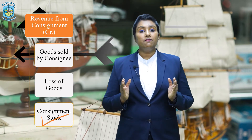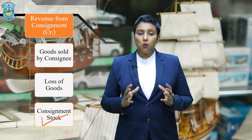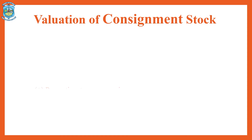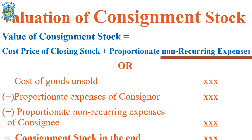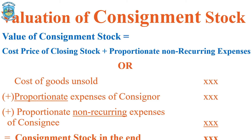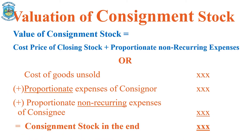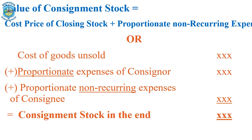Now let us understand the most important concept: the valuation of closing stock or consignment stock. The basic formula is the cost price of the unsold goods plus the proportionate non-recurring expenses. The cost of unsold goods is calculated by multiplying the cost per unit sent by the number of units unsold. You must then add all expenses incurred until the goods have reached the consignee's godown — first, the proportionate consignor's expenses, because the consignor had already incurred certain expenses by the time the goods reached the godown.